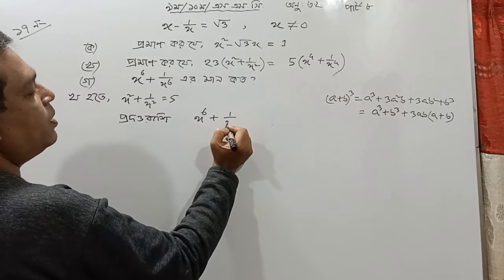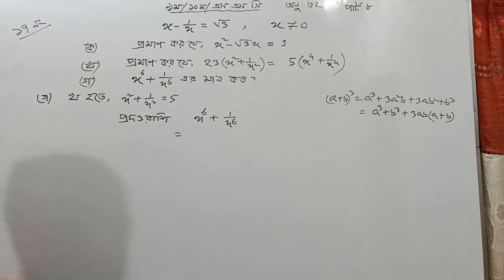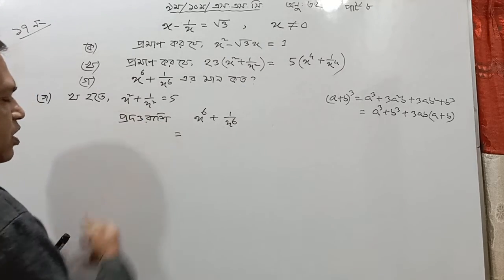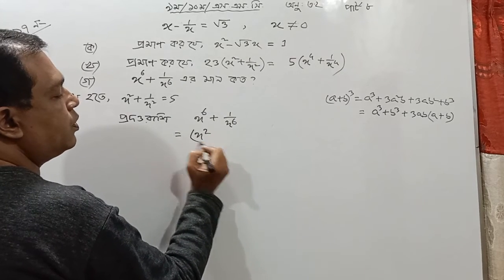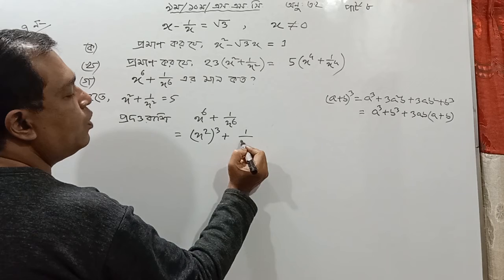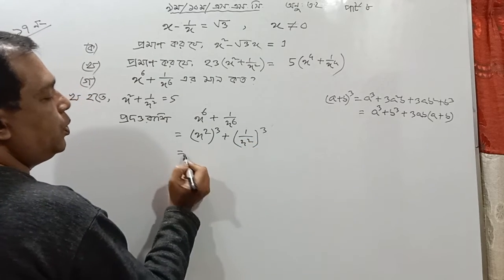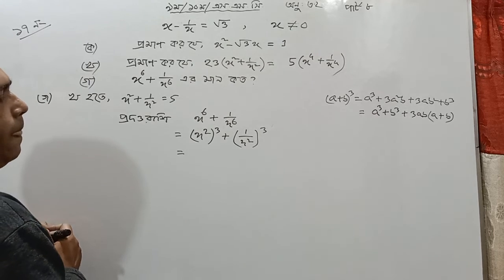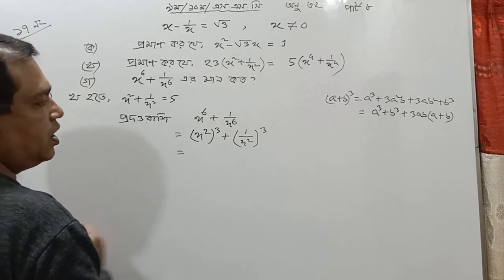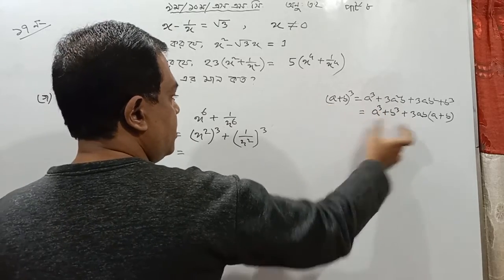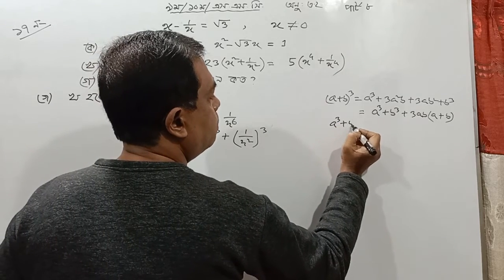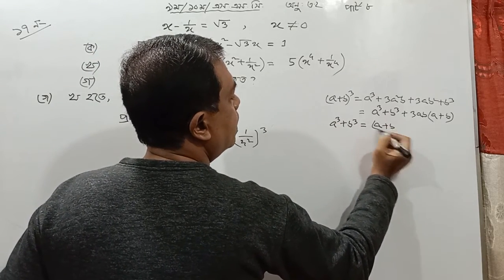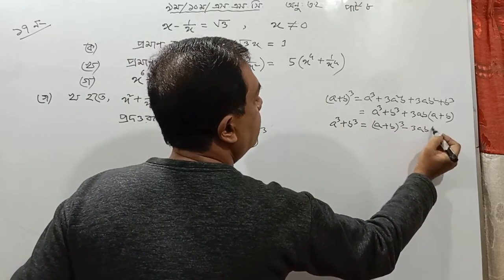So, x to the power 6 plus 1 by x to the power 6, plus 1 by x to the power 6, minus 2, which will go around x to the power 7 by x to the power 1 by x to the power 7 by x. A cube plus b cube equals a plus b cube minus 3ab into a plus b.